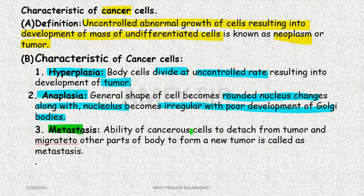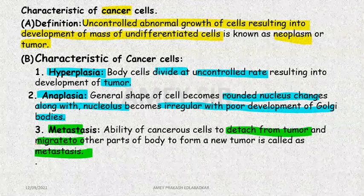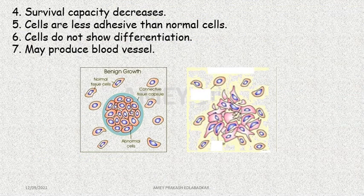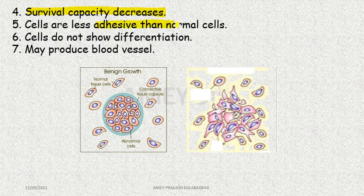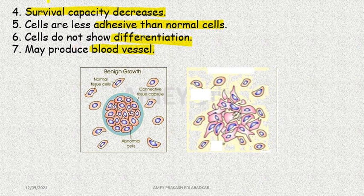The ability of a cancerous cell to detach from the tumor and migrate to other body parts is called metastasis. Cell survival capacity decreases, it becomes less adhesive than normal cells, and does not show differentiation — differentiation leads to maturation. Angiogenesis, meaning formation of blood vessels, also occurs.